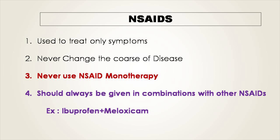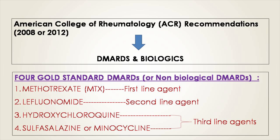Never use NSAID monotherapy. Whenever you give NSAIDs to a rheumatoid arthritic patient, you must never give a single NSAID alone. These drugs should always be used in combination with other NSAIDs. For instance, you can give the combination of ibuprofen and meloxicam.